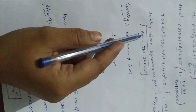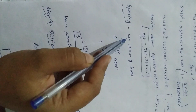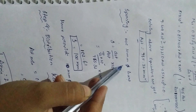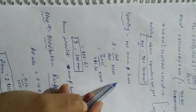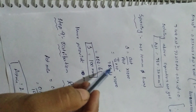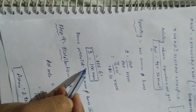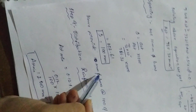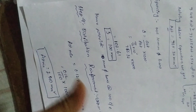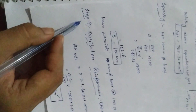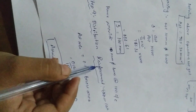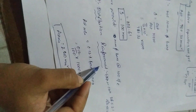Spacing of main bars is calculated assuming 10 mm diameter bars. Using spacing formula: (ast / Ast) × 1000. Substituting all values gives spacing of 100 mm. Hence provide 10 mm diameter bars at 100 mm center-to-center spacing.